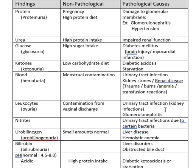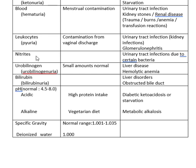If you have white blood cells for a pathological reason, it could be because you have a kidney infection or an inflammation. 'Itis' means inflammation — like appendicitis or tonsillitis. How about glomerulonephritis? That means some infection in your kidney. Hopefully you'll go on and take medical microbiology and find out about the bacteria that can get in the urinary tract and release nitrites.